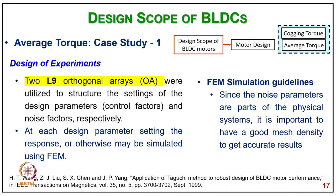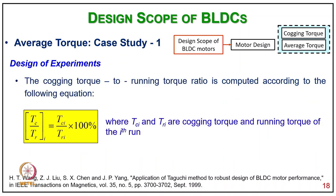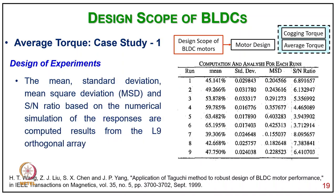Two L-array orthogonal arrays were used to structure the settings of control factors and noise factors respectively. For each design parameter setting, the responses are simulated using finite element analysis. Since noise parameters are part of the physical system, it is important to have a good mesh density to get accurate results. The cogging torque to running torque ratio is computed as: (TCi/TRi) × 100, where TCi and TRi are the cogging torque and running torque at the i-th run. The mean, standard deviation, mean squared deviation, and S/N ratio based on numerical simulation are then computed from the L-array orthogonal results (runs 1 to 9).